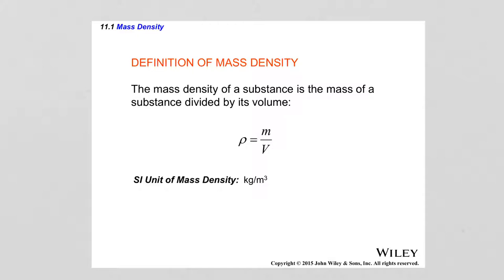When the density is measured with high accuracy, every substance has its own unique density value and different substances can be differentiated by their densities. In general, liquids have higher densities than gases, and this is due to the molecular structure of liquids versus gases. For liquids, the molecules are much closer spaced from each other, which leads to more molecules per unit volume and therefore larger mass per unit volume.